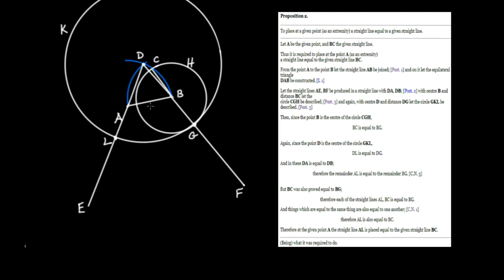Now what we have to prove is that AL — going over to L — is actually equal to BC, which was the starting line segment. AL was the thing we sought to produce. To prove this, let's think about these circles. Since point B is the center of circle CGH, BC is equal to BG — they are both radii of the same circle, which follows from Definition 15 and 16.